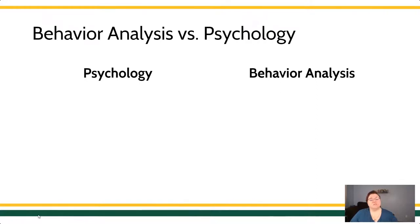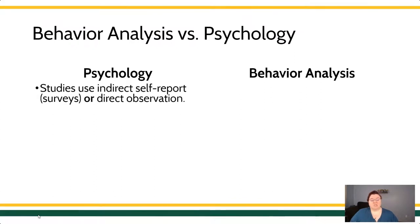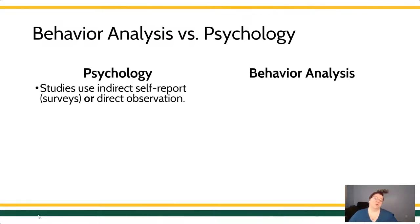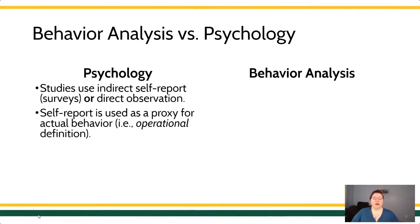Some of the big differences between behavior analysis and mainstream psychology include things like the fact that psychology uses a lot of indirect self-report measures like surveys or direct observation in their studies, meaning that they consider both direct observation and self-report surveys to be worthy independent variables.